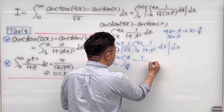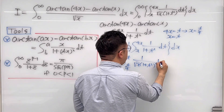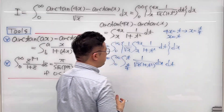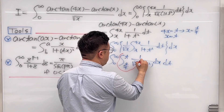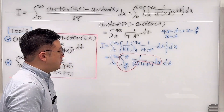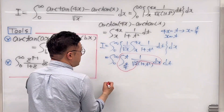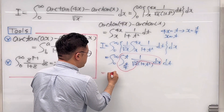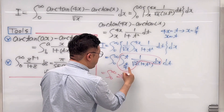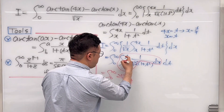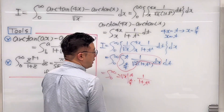Then after this, we have 1 over square root of x times 1 plus t squared, and then we have dx dt. So we are working on this integral now with the inner integral from t over 4 to t of 1 over square root of x times 1 plus t squared dx, and the outer integral from 0 to infinity dt.